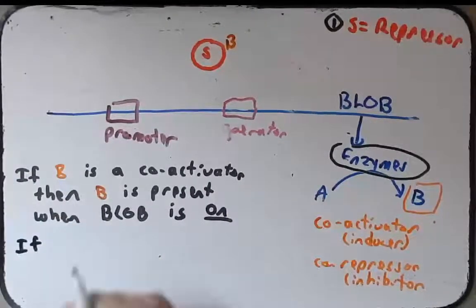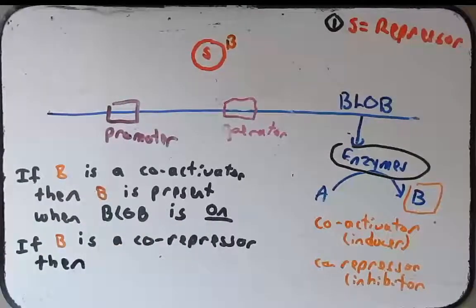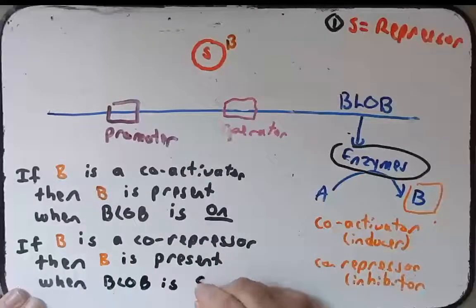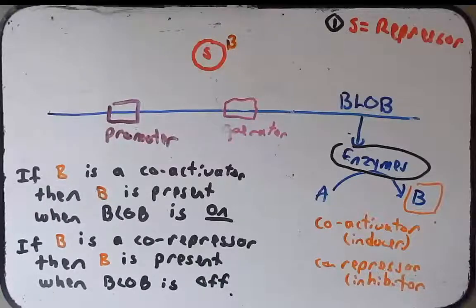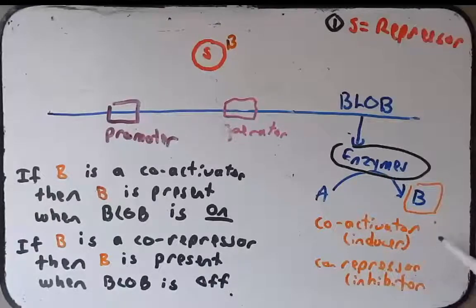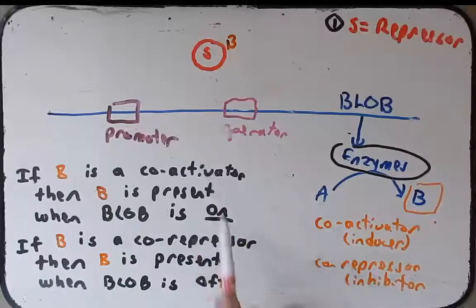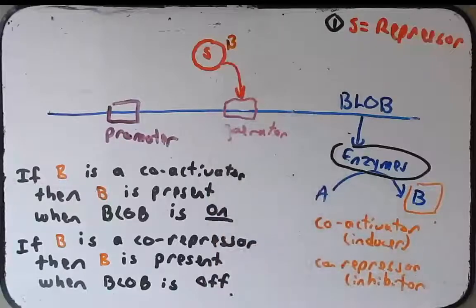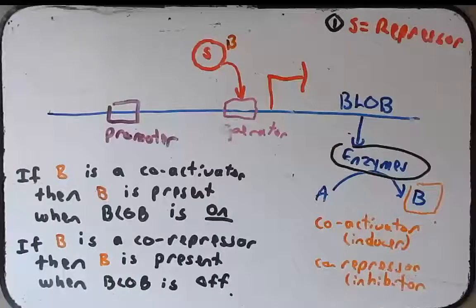Now, let's consider the other option. If B is a co-repressor or an inhibitor, then B is present when blob is off. Let me walk through that again. If B is a co-repressor, that means it is going to be present when the operon is off because that's its job. Its job is to help turn off operons. So that would mean that if B is a co-repressor, when it binds S, it will bind to the operator to effectively keep the blob operon off.